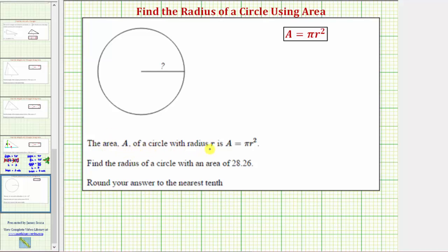The area A of a circle with radius r is given by the formula A equals pi r squared. We're asked to find the radius of a circle with an area of 28.26 square units, and we're asked to round to the nearest tenth.